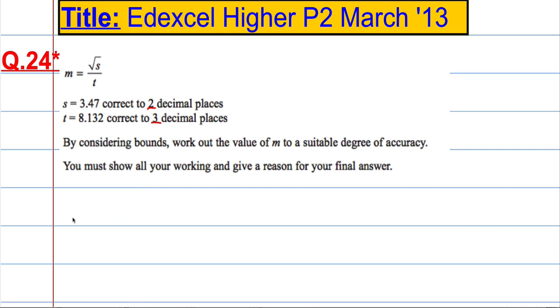Okay, so let's have a look at s. When it's talking about bounds, we're discussing the idea that it was rounded. So it was rounded to 3.47, and that was rounded correct to 2 decimal places, which means it could have been as high as 3.474999... etc., which is essentially 3.475. That's how high it could have been.